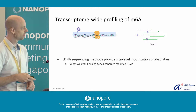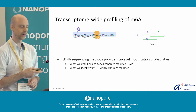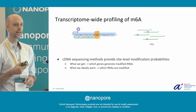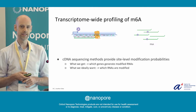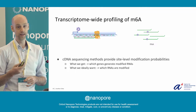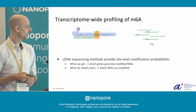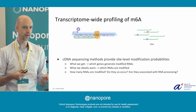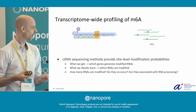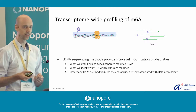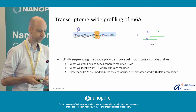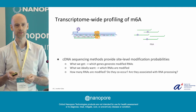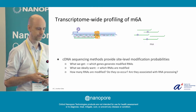But what we want to know is really the picture on the right. We want to know which individual RNAs are modified. And if we are able to do that, we can answer more questions — for example, how many of these RNAs are actually modified, do modifications co-occur, and are they associated with RNA processing?